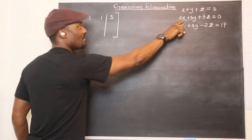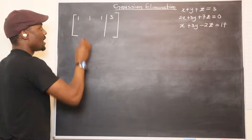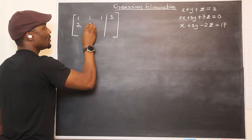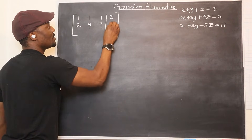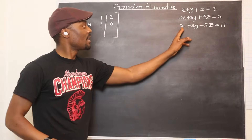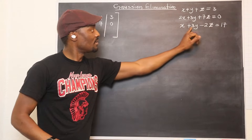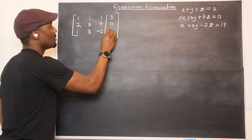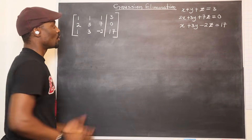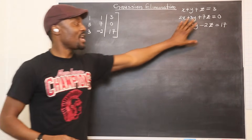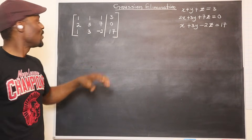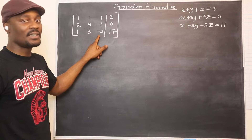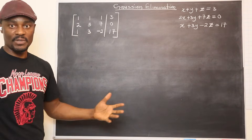We do the same thing for the second equation. It's going to be two, three, seven, and this will be zero. And then we're going to get the next one which is one, three, negative two, and seventeen. So you've recreated this here — it's the same exact thing. All of these are X's, everything here is a Y, everything here is a Z, and these are all the answers for the three equations.